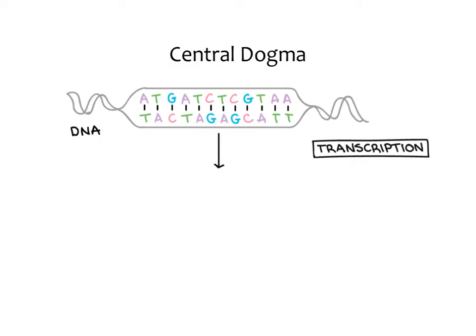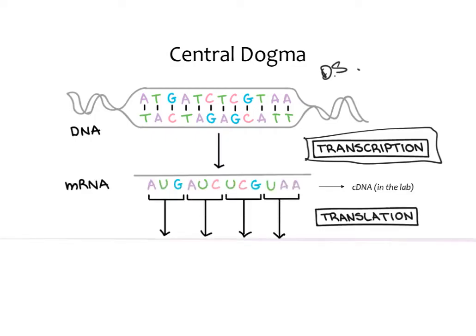Let's start by reviewing the central dogma of biology. We've talked about this before — DNA forms RNA which forms protein. So you can imagine that you have double-stranded DNA in your cell, and this gets transcribed, generating mRNA. This is your single-stranded version, with the base U instead of T, and this is what will migrate out of the nucleus in order to be converted to protein.